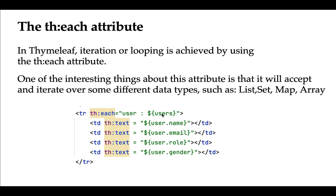Consider the example here — we have a list of users, and this list of users comes from a Spring MVC controller. Here we are using the th:each Thymeleaf attribute to iterate over the list of users. If you can notice, 'user' is a local variable, and the scope of this local variable is up to the tr element — we cannot access this user local variable outside the tr element.